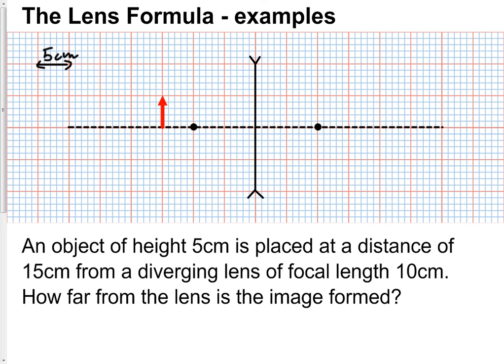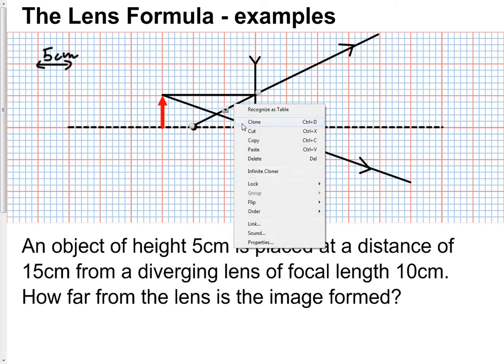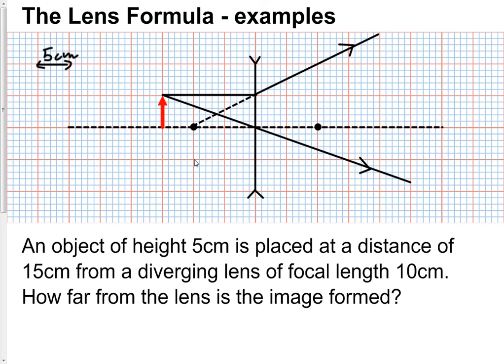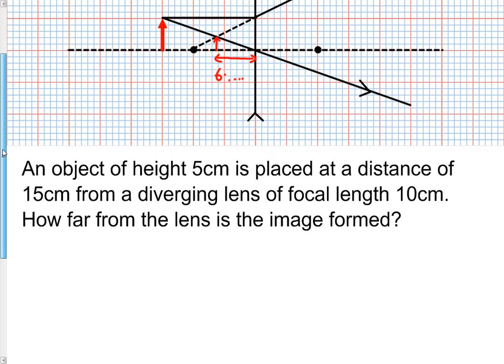Let's get a rough idea just by using the ray diagram. A ray parallel with the axis emerges as if it's come from the focal point. A ray through the centre of the lens is not deviated, so we're just going to have a dotted line here, a virtual ray that looks like it's coming from the focal point. Our image is going to be about here, so this is our image distance, which is hard to say - it's a little bit over 6cm, 6 point something centimeters. But again we're limited by our diagram.